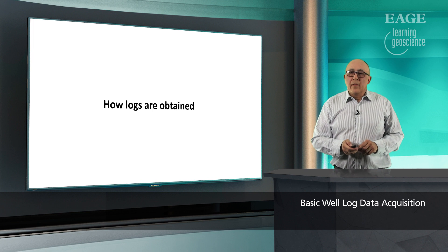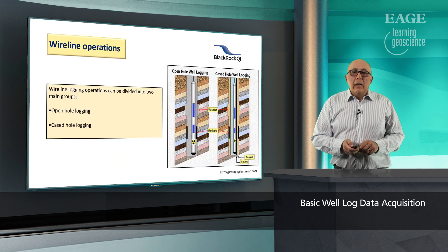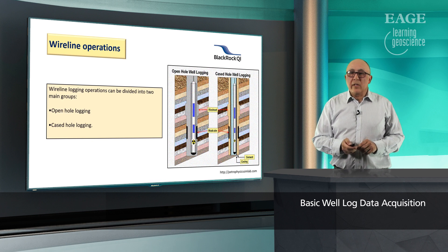Logging operations. There are two logging operations to acquire logs: wireline and LWD. Wireline is the older way of acquiring logs, which is still operational, while LWD is newer and cheaper. Wireline operations are divided into two groups: open-hole logging and cased-hole logging. Open-hole is when the cement and casing has not been applied, while cased-hole logging is when casing has been set and you need information on porosity, water saturation, and how casing and cement are performing.